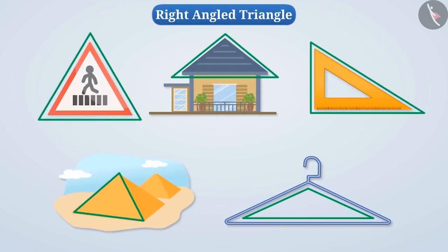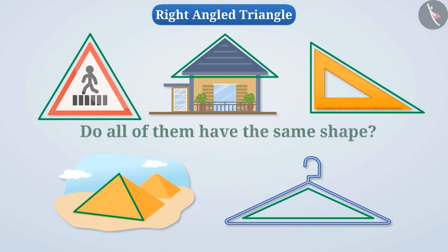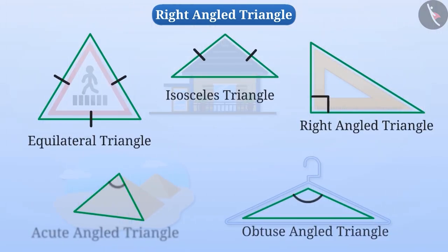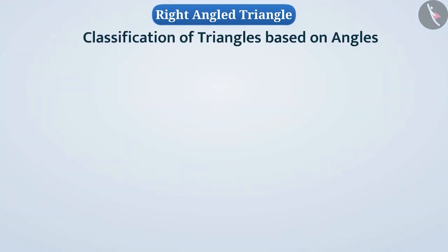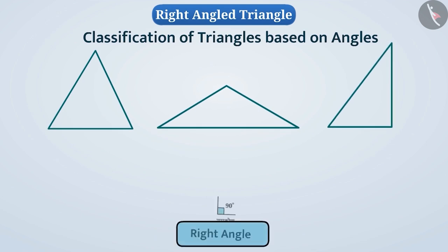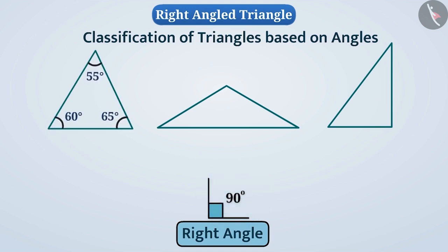You must have seen many triangles in your life. Are they all of the same shape? Think for a while. Triangles differ depending on the sides and the angles. When we talk about the classification of triangles based on angles, we compare the angles of the triangle with the right angle. If all the angles of the triangle are smaller than the right angle, then we call it an acute angle triangle.